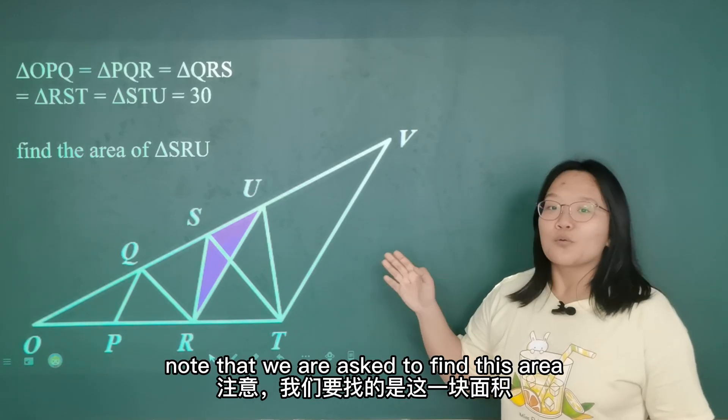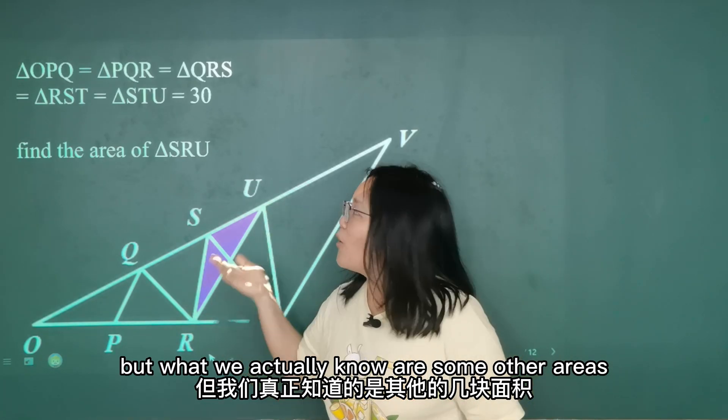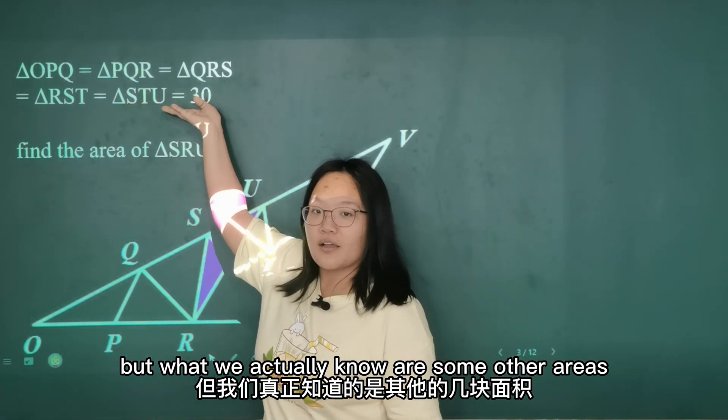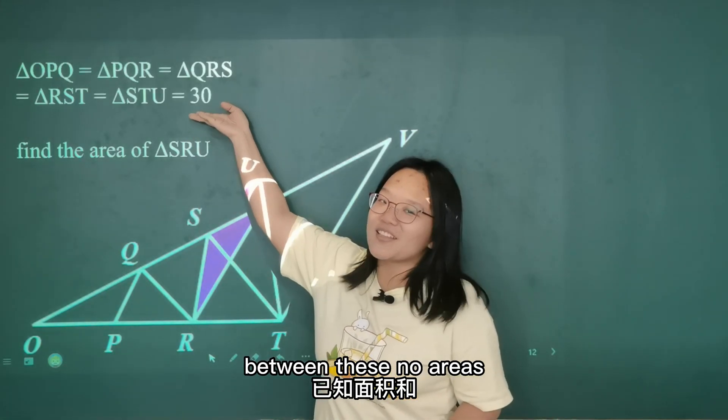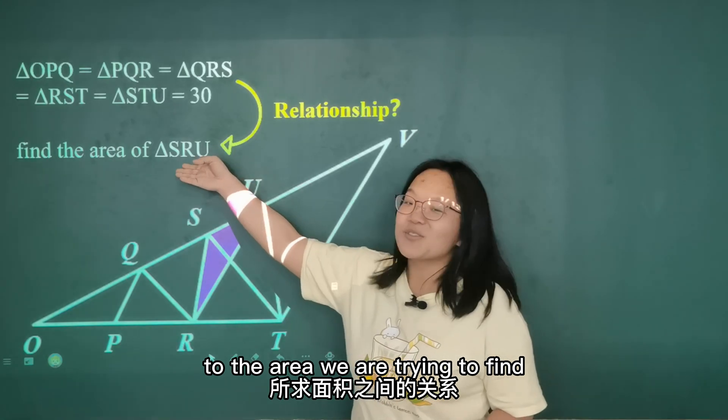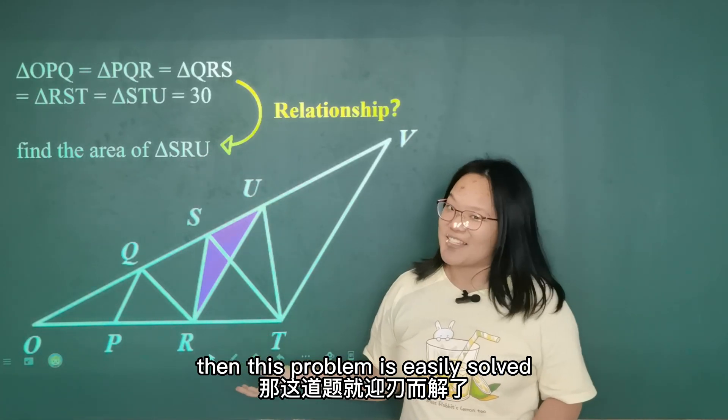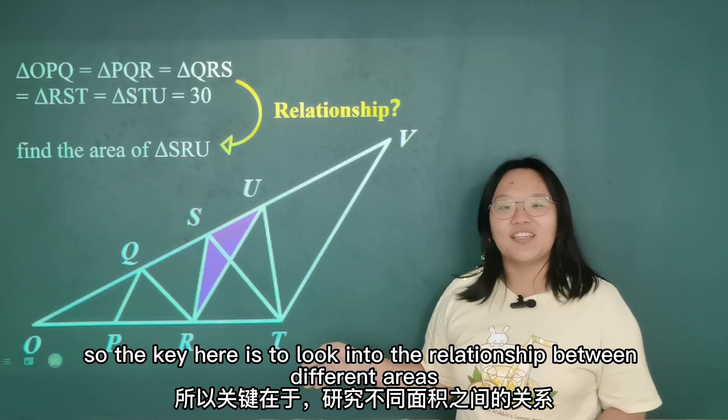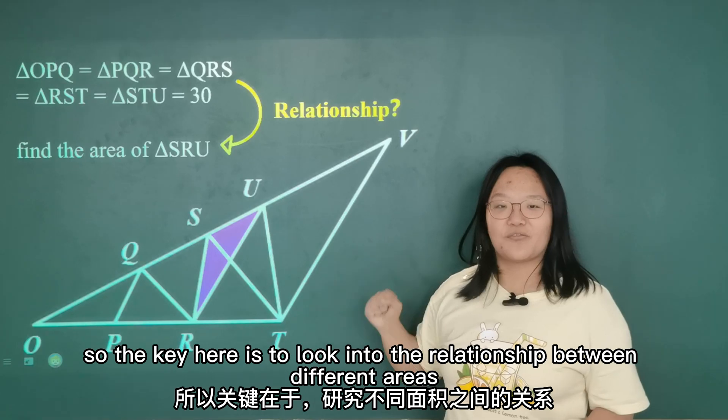Note that we are asked to find this area, but what we actually know are some other areas. So if we can find the relationship between these known areas to the area we are trying to find, then this problem is easily solved. So the key here is to look into the relationship between different areas.